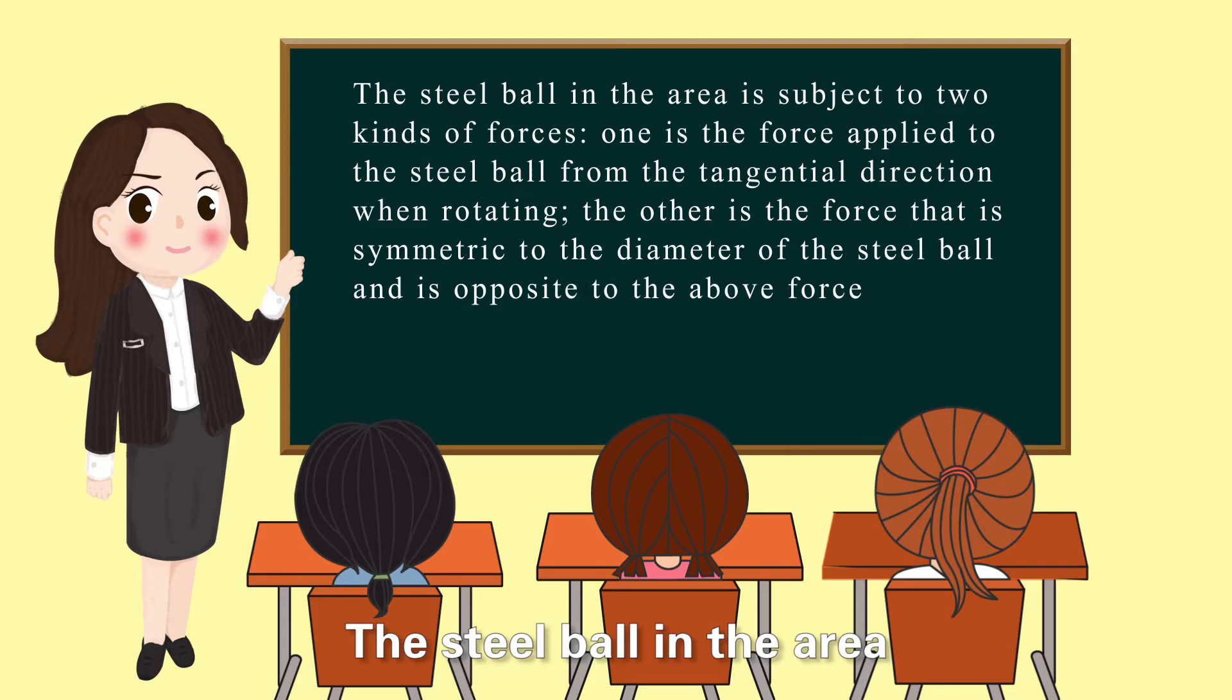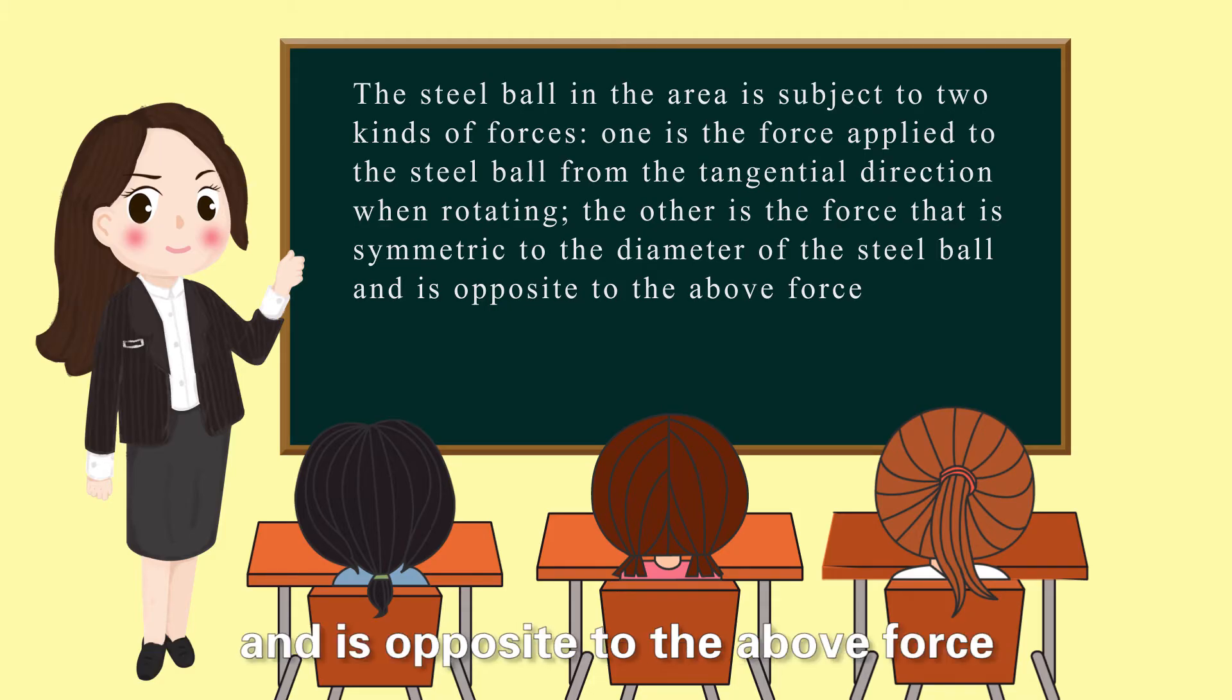The steel ball in this area is subject to two kinds of forces. One is the force applied to the steel ball from the tangential direction when rotating. The other is the force that is symmetric to the diameter of the steel ball and is opposite to the upper force.